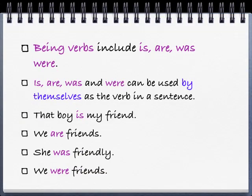These verbs are a little bit more difficult for children to understand. They're called being verbs, and they include is, are, was, and were. Is, are, was, and were can be used by themselves as the verb in a sentence. The boy is my friend — is is the verb. We are friends. She was friendly. We were friends.